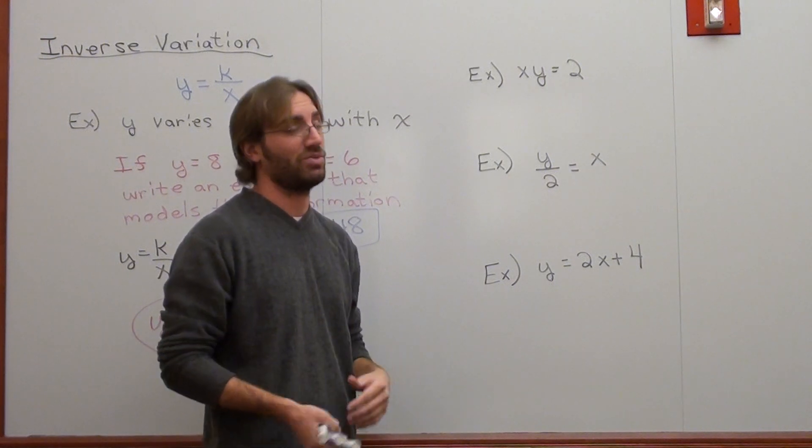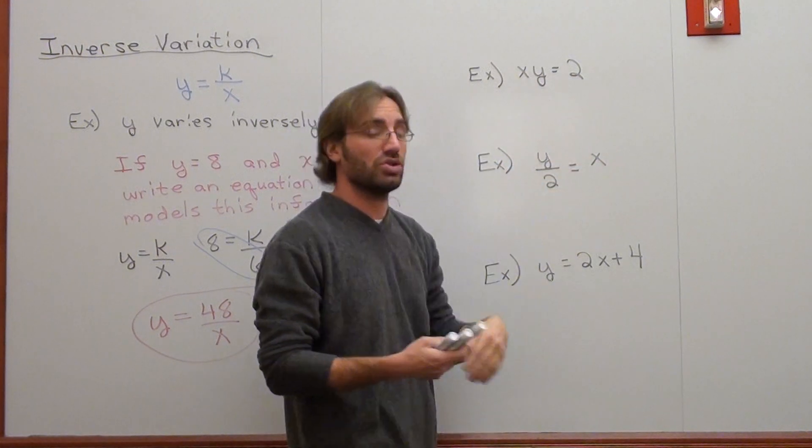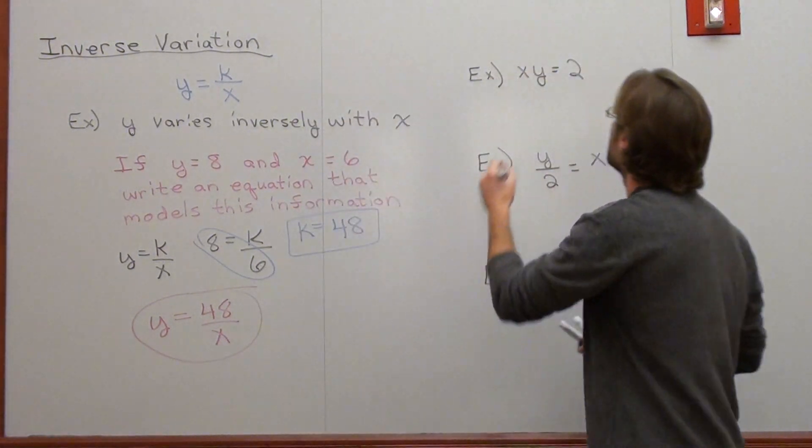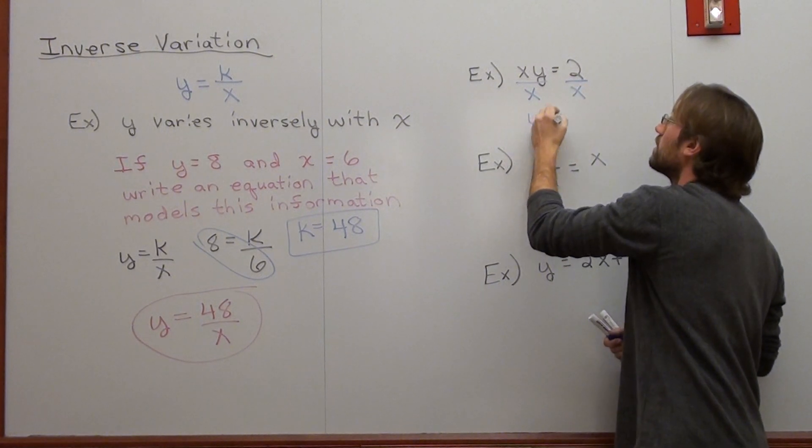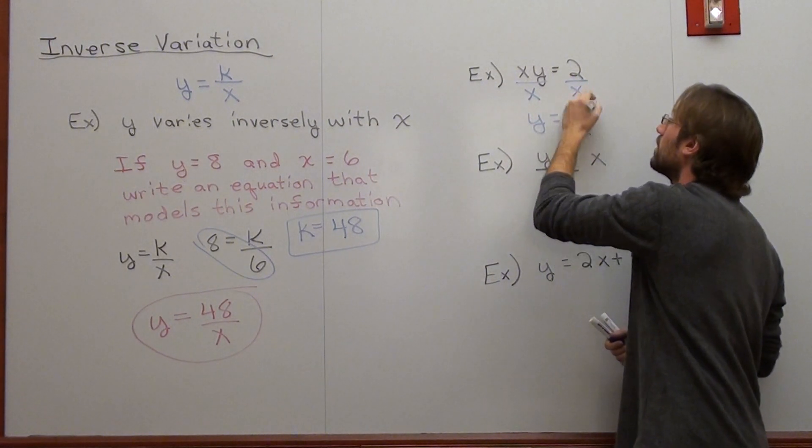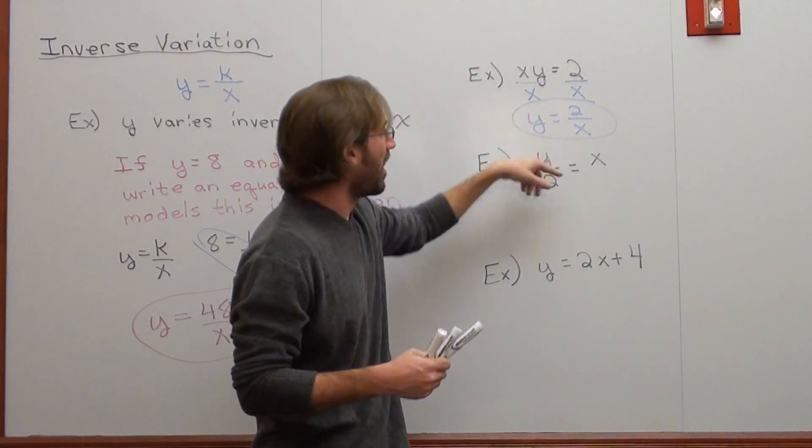And if it doesn't, it's not inverse variation. So I have x times y equals 2. Solve for y. This works. y equals k over x. k is 2. Fine.